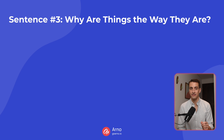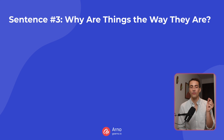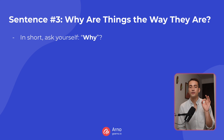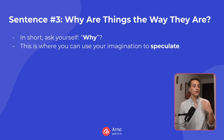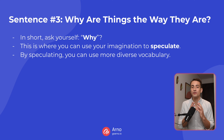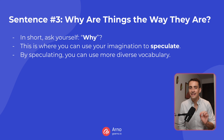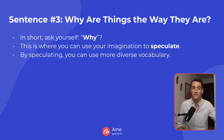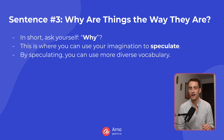The third and final sentence — in this sentence, you are going to take a guess about why things are the way they are. In short, in this final sentence, you are going to ask yourself why. This is where you can use your imagination to speculate. Speculate means to make a guess. Speculating is great because it allows you to use more diverse vocabulary. When you speculate, it means you don't just have to describe what you can see in the image, but you can speculate about what people are doing, or what they were doing before, or what they're going to do after.